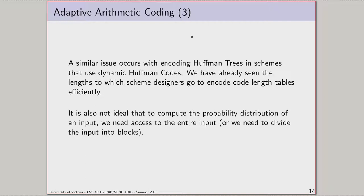We could store the frequency table, but that requires saving all our data, figuring out frequencies, and finding an efficient way of storing the table — and as we've seen from assignment two and the bzip lecture, that's no small feat. Even encoding a Huffman tree is a rough one. And maybe we'd rather not have to save up our entire input to compute its distribution. It would be nice to have a way of viewing probabilities that evolve over time, perhaps a sliding window approach where the probability at step i is based on the last 1000 steps.